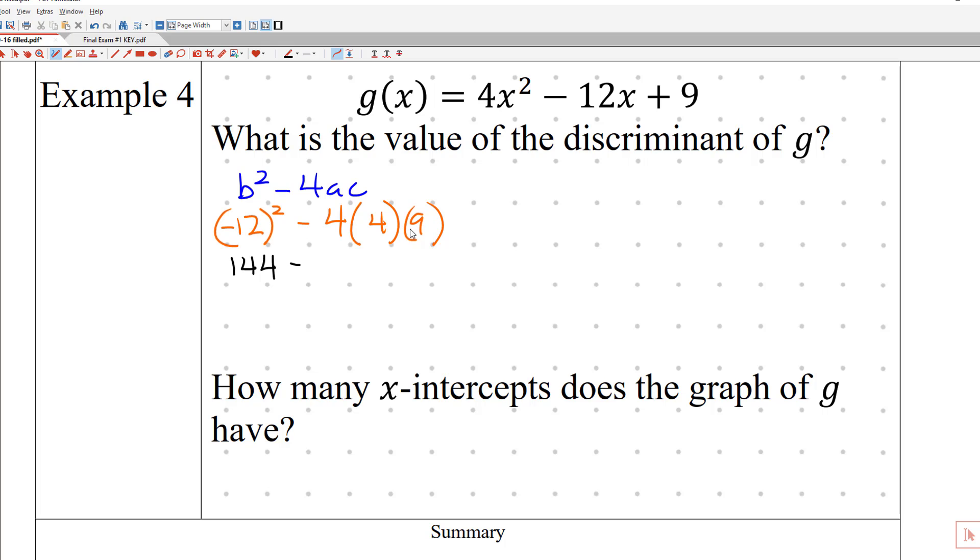I'm just going to go at random. 4 times 9 is 36. And 36 times 4. 6 times 4 is 24. Carry the 2. 3 times 4 is 12. Plus 2 is 14. Oh, 144. It's the same number. 144. So when I subtract the 2, I get zero.